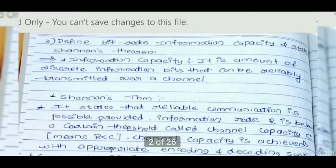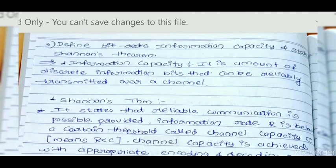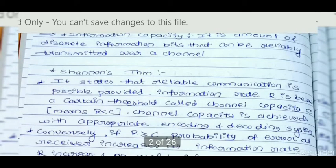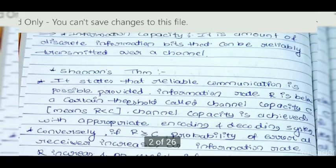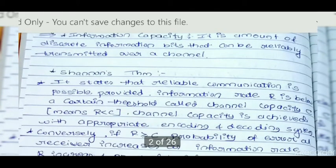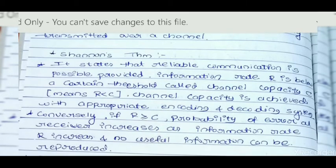Now we are going to discuss information capacity and Shannon's theorem. Information capacity is the amount of discrete information bits that can be reliably transmitted over a channel — that is, raw bits of ones and zeros. Shannon's theorem states that for reliable communication, it is possible to provide information rate R below a certain threshold called channel capacity C, that is R is less than C.